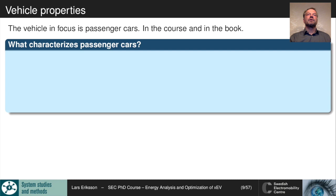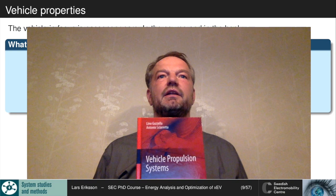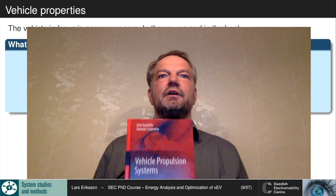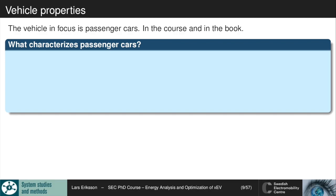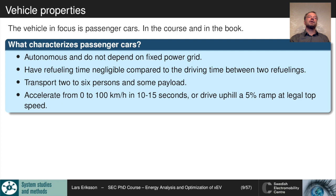The course book is by Lino Guzzella and Antonio Chiarretta, which gives a good description of vehicle powertrains and equations. The focus is on passenger cars: they are autonomous and do not depend on fixed power grids, have a refueling time negligible compared to driving time, can transport two to six persons, and can accelerate from zero to 100 km/h in 10 to 15 seconds or drive uphill on a five percent ramp at legal top speed.